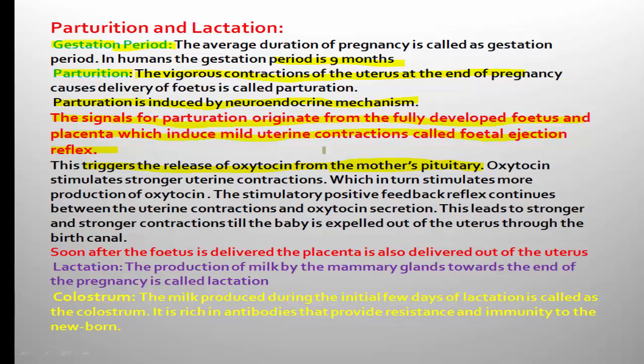Once the uterine muscles begin contracting and the fetal ejection reflex is started, it triggers the mother's pituitary to release oxytocin. This oxytocin stimulates stronger uterine contractions, and under the influence of oxytocin the uterine muscles contract faster and more strongly, which in turn stimulates more and more production of oxytocin from the mother's pituitary.